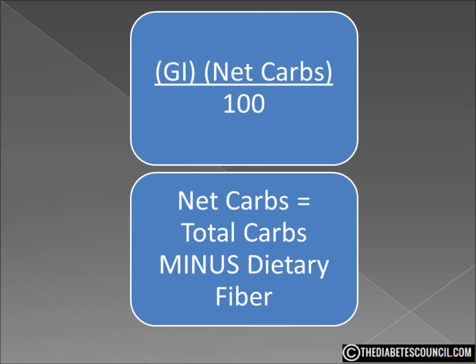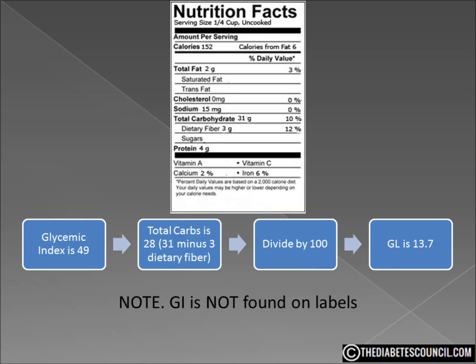So let's do a quick example of how to determine a food's glycemic load. Let's take corn. The GI of corn is 49. You divide that by 100 and you get a glycemic load of 13.7. So corn is a low GI food, but it's a medium glycemic load food.